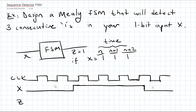In this example, we will design a Mealy finite state machine that will detect three consecutive ones in a 1-bit input X. We have this X input which is 1 bit, and we have our finite state machine. I have an output Z, and Z will become 1 whenever I have three consecutive ones in my input.